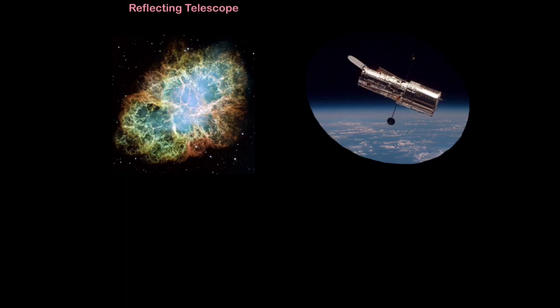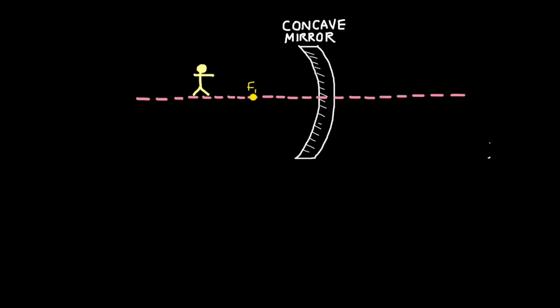Refracting telescopes are limited — although they produce beautifully high resolution images, they're limited in how far they can see. This is why reflecting telescopes are better in some ways. For example, the Hubble Space Telescope is a reflecting telescope, which allows us to take amazing pictures like this supernova — a refracting telescope would not be able to see this far. Lenses are very hard to make large, so refracting telescopes have a smaller aperture and can't collect a lot of light or see distant faint stars. Large mirrors are much easier to manufacture, so we can make reflecting telescopes with large concave mirrors and much larger apertures to collect fainter light from more distant galaxies and stars.